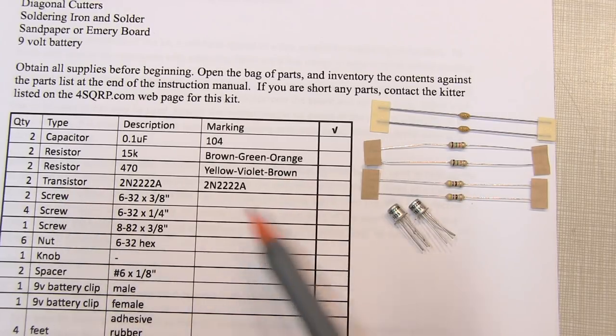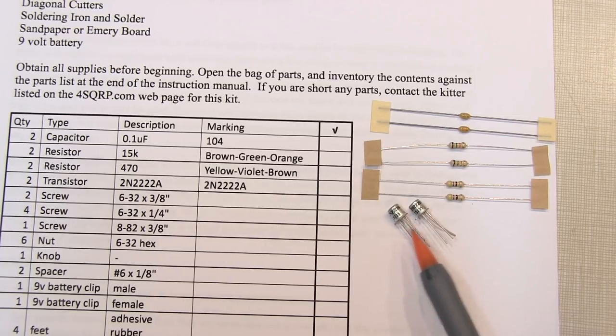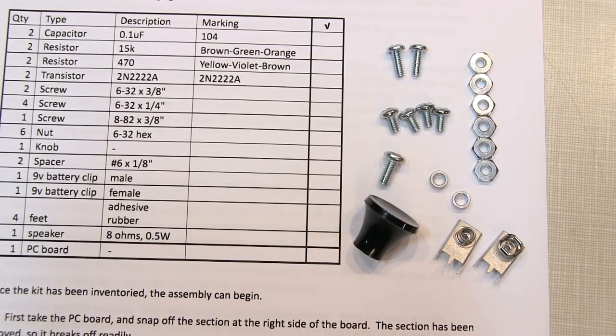And the two transistors. These are the metal cans with three leads. Next make sure you've got all of the hardware.